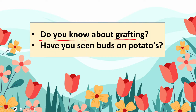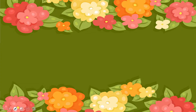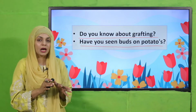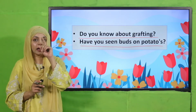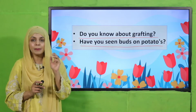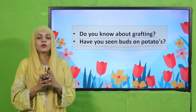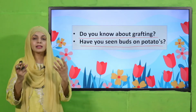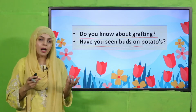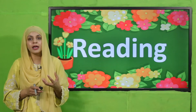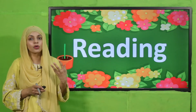Pre-reading questions: Do you know about grafting? Have you seen buds on potatoes? Do you know what grafting is? If not, we will discuss it now. Have you ever seen buds on potatoes — they are slightly black in color. If you have seen them, raise your hand. Today we are going to discuss how from these different parts a new plant can grow.